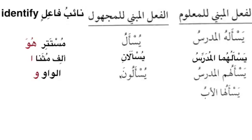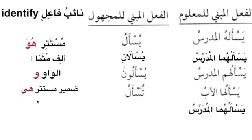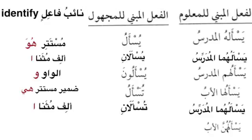Yas'aluha al-abu - the teacher asked her, so she was asked - tusalu. The naib fail here is mustatir because it is not attached to the fi'l, and it is taqdiri. For the female dual, yas'alahuma al-mudarrisu - it will be tusâlâni; naib fail is alif musannaa. Yas'aluhunna al-abu - all of those women were asked - making it passive majhul: yus'alna. The naib fail is noon.